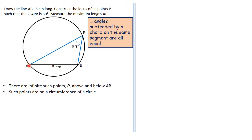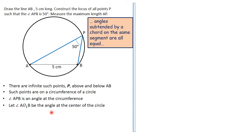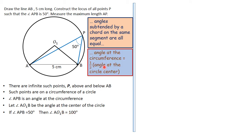P can be anywhere from A all the way along the major arc to B; the construction satisfies the locus of P. Angle APB is an angle at the circumference. If O₁ is the center of the circle, then angle AO₁B is 100°, because the angle at the center is twice the angle at the circumference — so the center angle is 100° and the circumference angle is 50°.